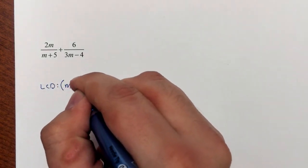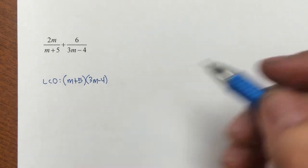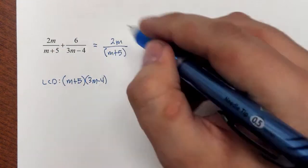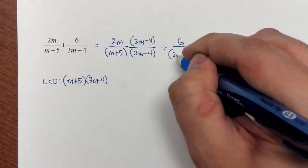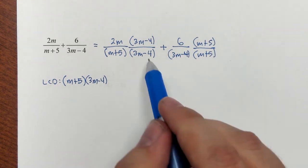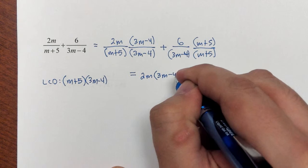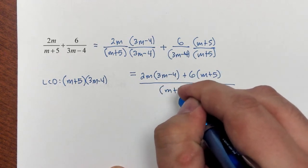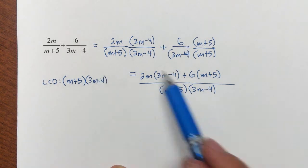My least common denominator will have to be divisible by both, so it will have to have both distinct factors: (m+5)(3m−4) as my LCD. I'll take the first expression and multiply in what is missing — 3m−4. The second expression is missing m+5, so I'll multiply that in. If you get this idea of multiplying in what's missing, you can go straight to this step. What I have is 2m(3m−4) plus 6(m+5) over my LCD — each numerator times its missing factor, combined over the LCD.